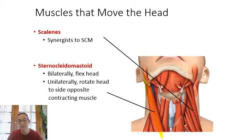Associated with the sternocleidomastoid are smaller synergistic muscles called the scalenes, which are synergists to the SCM.